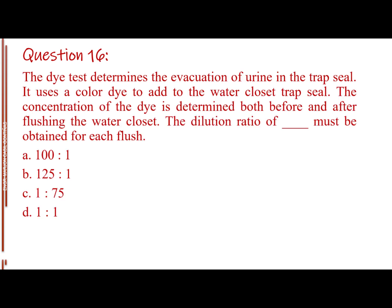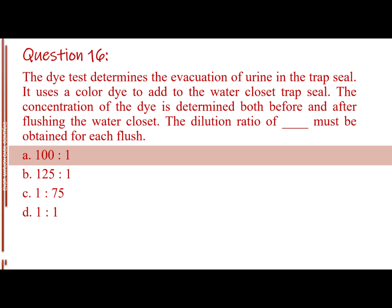Question number 16. The dye test determines the evacuation of urine in the trap seal. It uses a color dye added to the water closet trap seal. The concentration of the dye is determined both before and after flushing the water closet. The dilution ratio of blank must be obtained for each flush. Letter A, 100 is to 1. Letter B, 125 is to 1. Letter C, 1 is to 75. Letter D, 1 is to 1. The answer is Letter A, 100 is to 1.